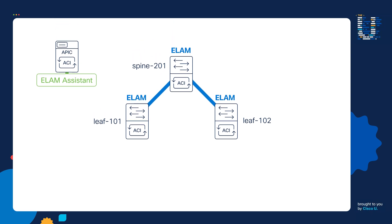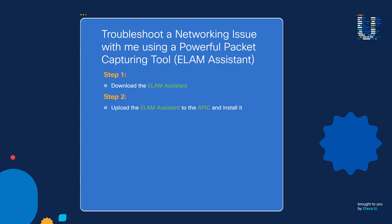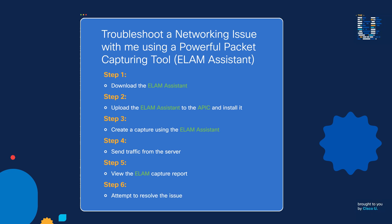Here's the scenario we're going to troubleshoot: a web server is behind leaf 101, an app server is behind leaf 102, and the web server cannot SSH into the app server. We're going to troubleshoot this in six steps: step one, download the ELAM Assistant software; step two, upload and install it on the APIC; step three, create a capture on leaf 101 for SSH traffic; step four, send SSH traffic into leaf 101; step five, view the ELAM capture report; and step six, attempt to resolve the issue.